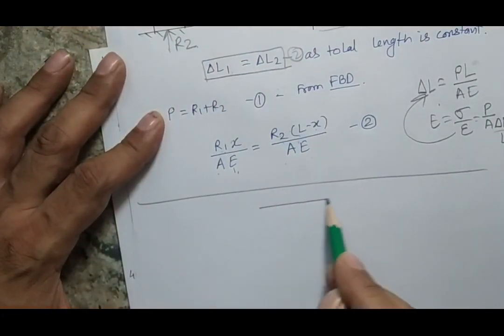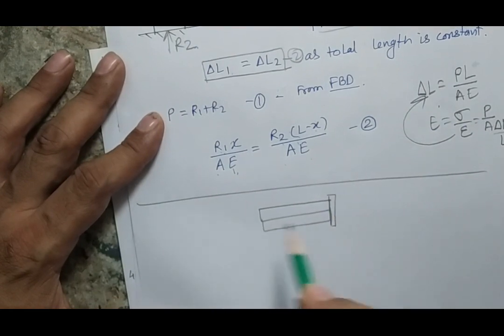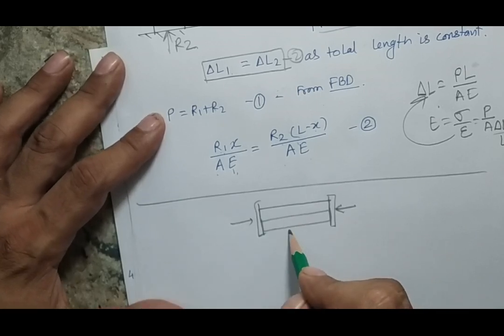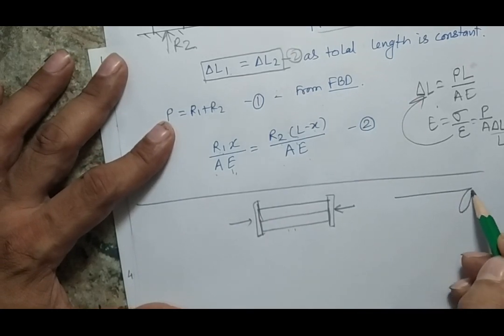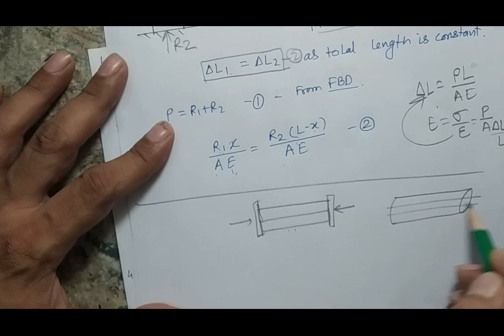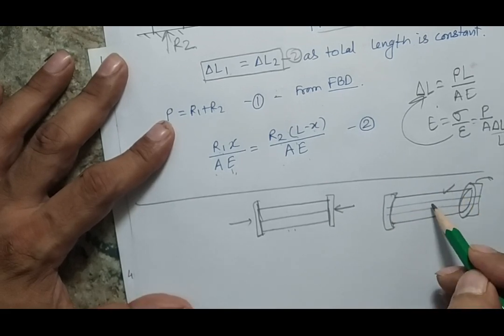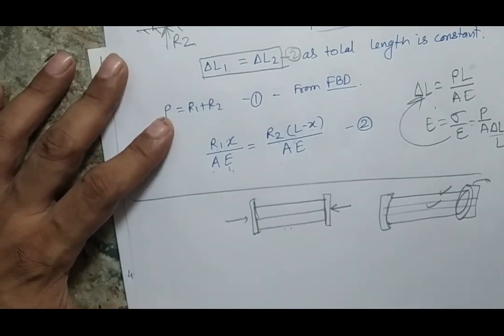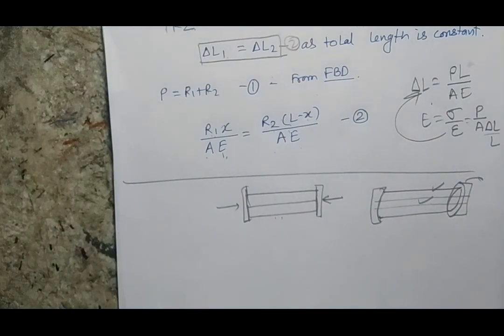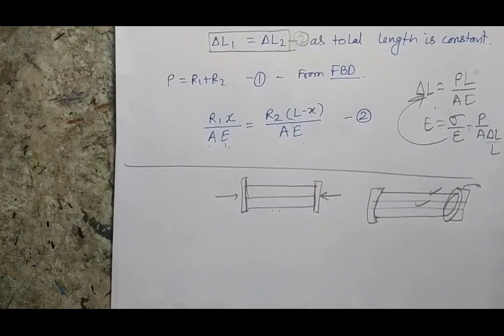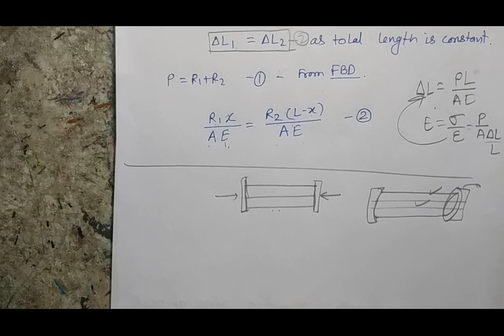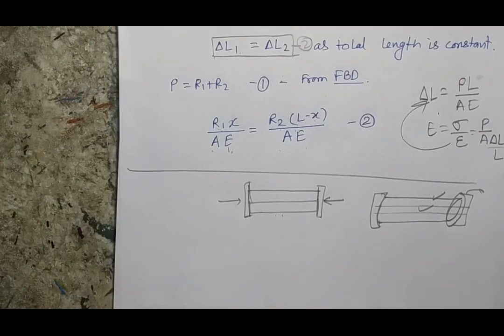In future lectures, we will solve more problems involving statically indeterminate structures, such as composite bars — two bars of different materials connected together and fixed between two plates with a force applied — and bolt-tube problems where tightening a nut causes compression in the tube and extension in the bolt. To summarize: for statically determinate problems, the laws of statics are sufficient. For statically indeterminate problems, we need additional equations — in this course, we use the deformation equation. Thank you.